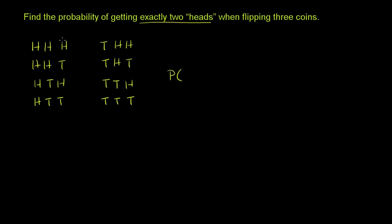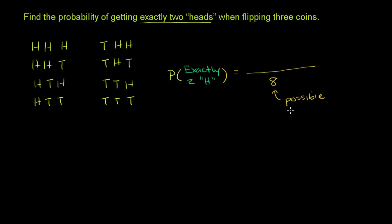Let me write this — the probability of exactly two heads. The probability of exactly two heads: what is the size of our sample space? I have eight possible outcomes, so eight is the size of our sample space — the possible outcomes. And how many of those possible outcomes are associated with this event? You could call this a compound event, because there's more than one outcome associated with it.